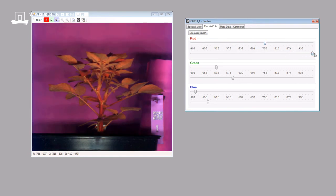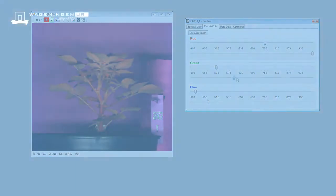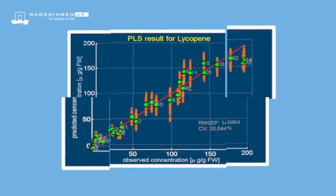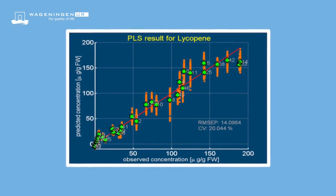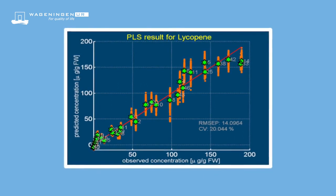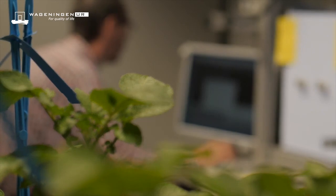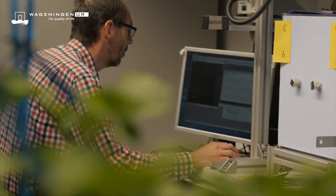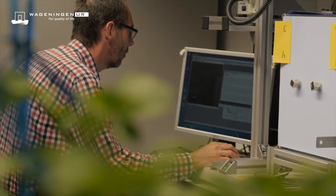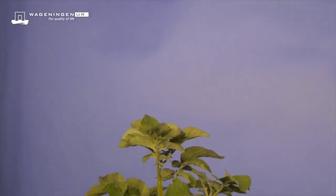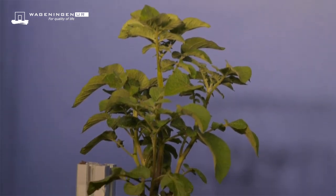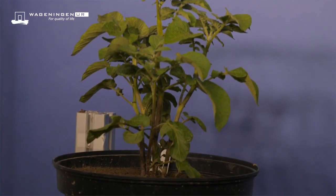The hyperspectral data cube is saved for further processing. Multivariate methods like partial least squares regression are used to build statistical models. Machine learning techniques are used to segment specific parts in the images such as disease spots. Also, commonly used indexes like the chlorophyll index or the NDVI can easily be extracted.